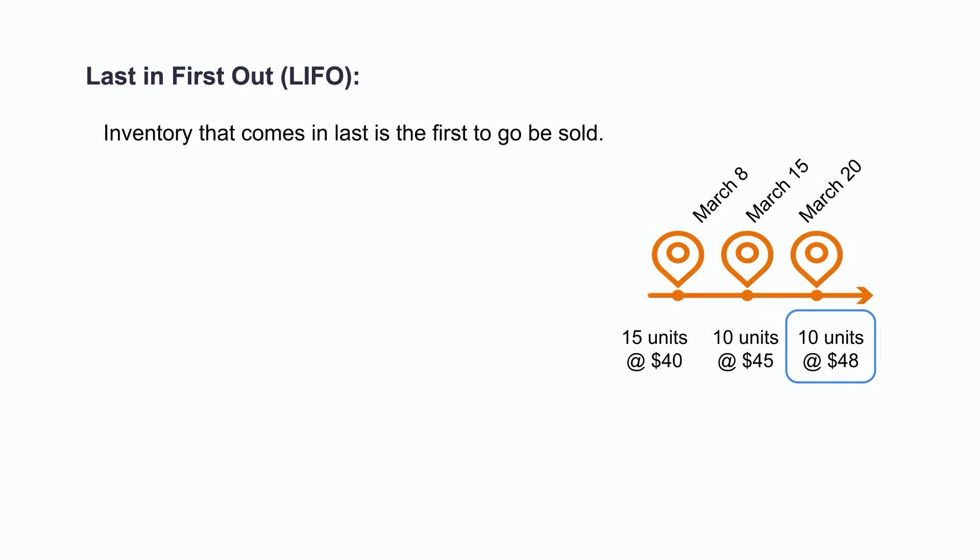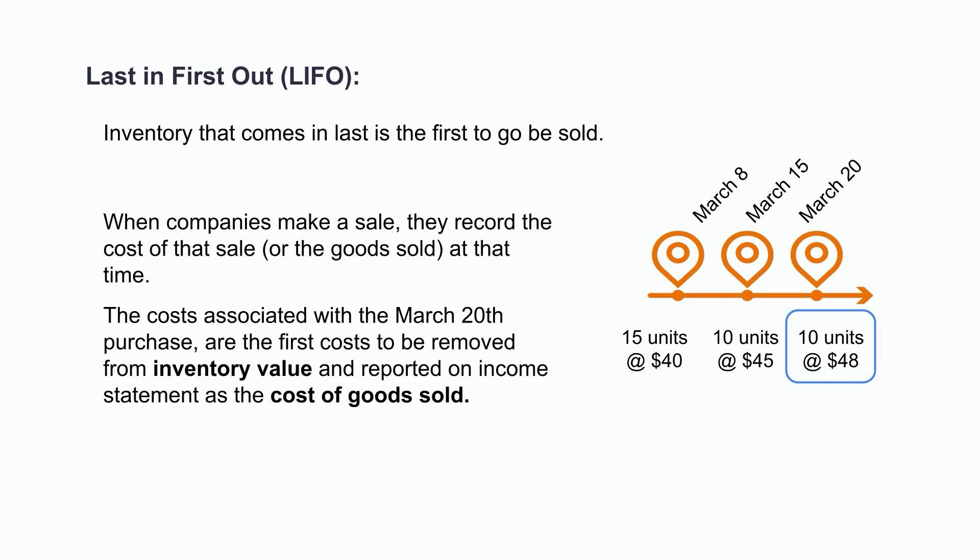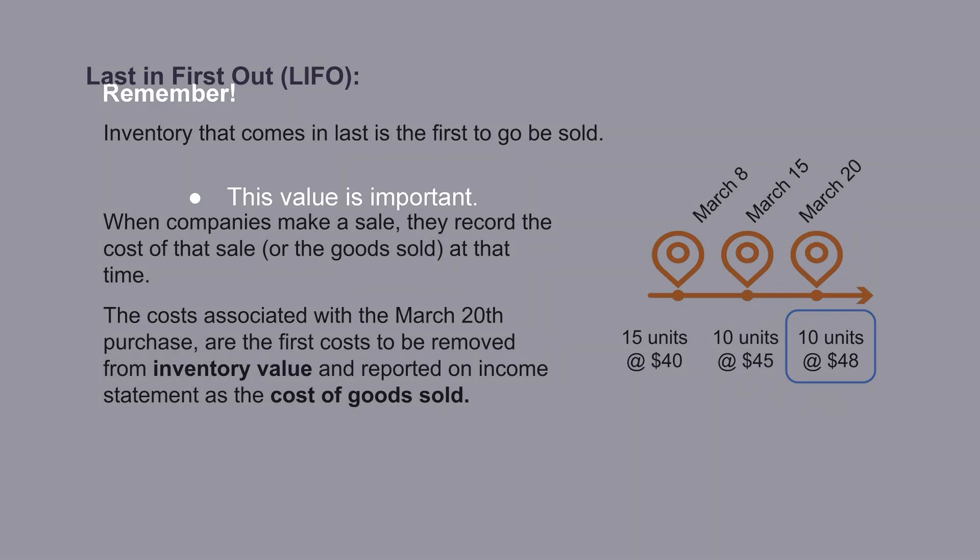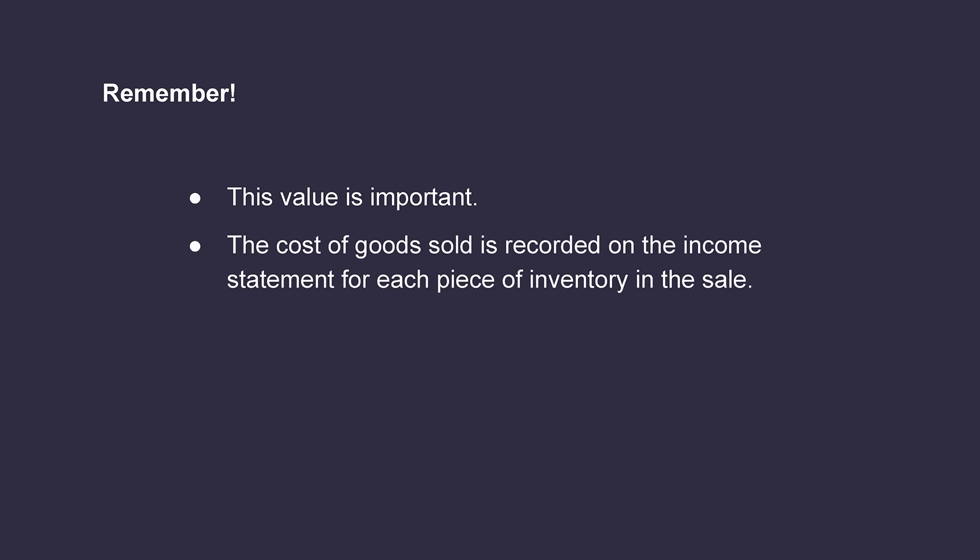When companies make a sale, they record the cost of that sale, or the cost of goods sold, at that time. So another way of thinking about this is that the costs associated with that March 20th purchase are the first costs to be removed from the inventory value and reported on the income statement as the cost of goods sold. This also means that the older costs are the ones that remain in the company's inventory balance on their balance sheet. If the company wasn't using a cost flow assumption, for each of the eight units sold, they would have had to specifically identify the cost of each piece of inventory by physically tracing each item to one of the three batches. However, since they're using last in, first out, they can assume that all eight units came from the last March 20th batch and would therefore each have a cost of $48 associated with it.